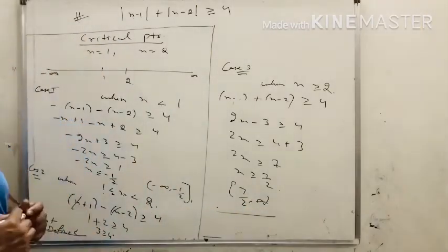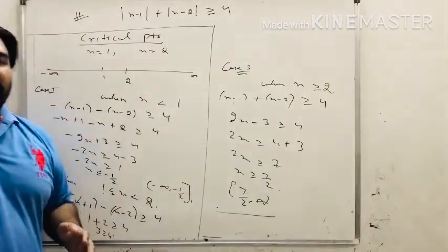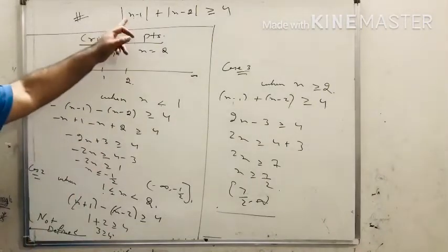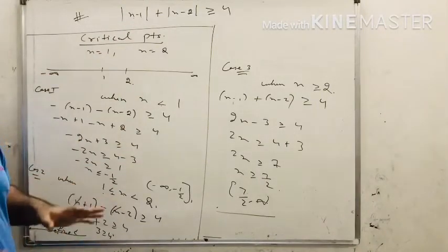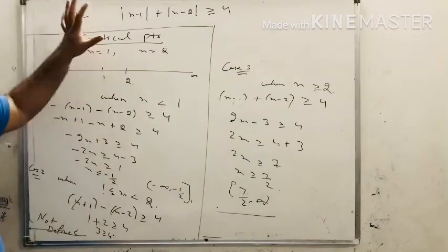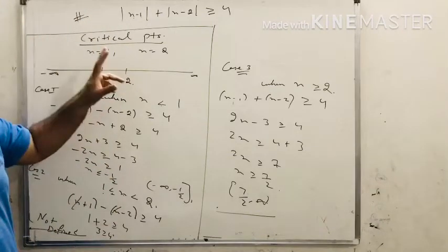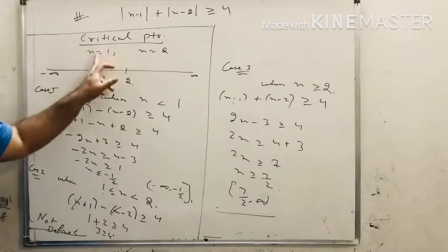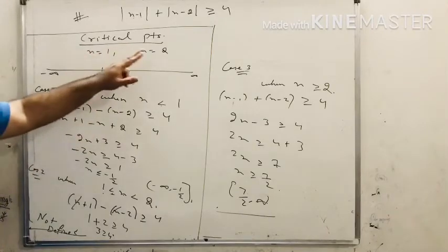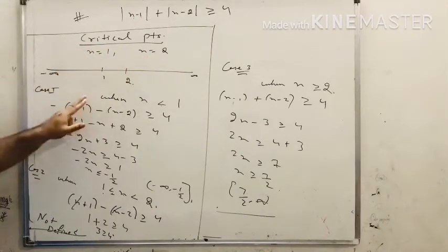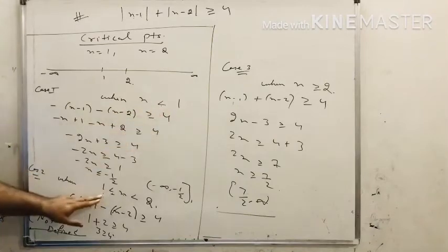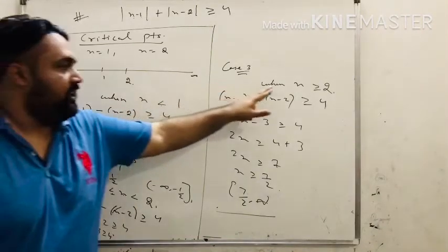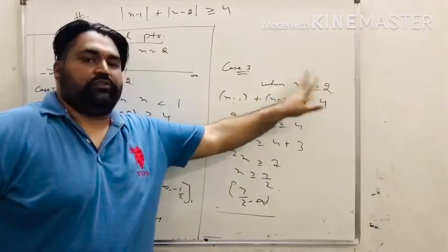To summarize: whenever the question has this form with two modulus expressions, we divide into three cases. First, find the critical points — in this example, 1 and 2. Draw them on a number line. Case 1: x less than 1 (both negative). Case 2: x between 1 and 2 (first positive, second negative). Case 3: x greater than or equal to 2 (both positive).